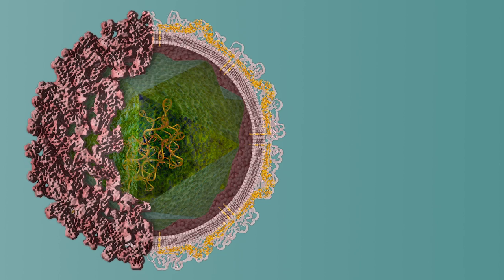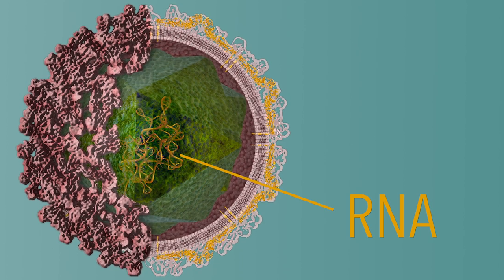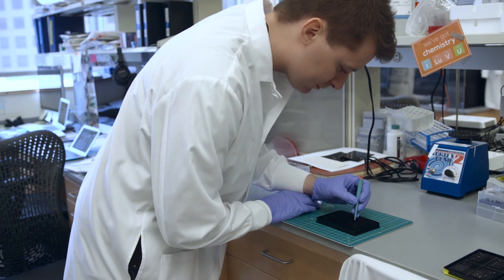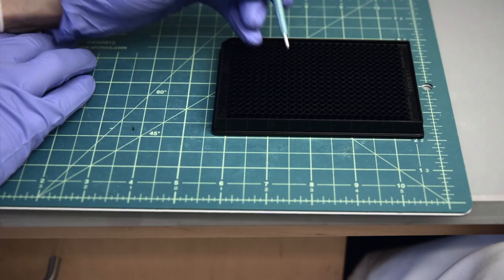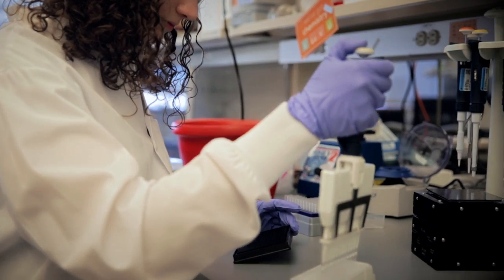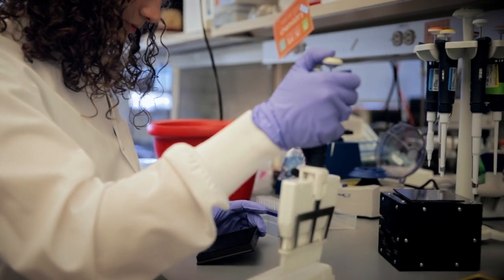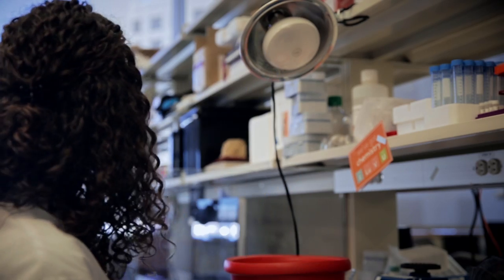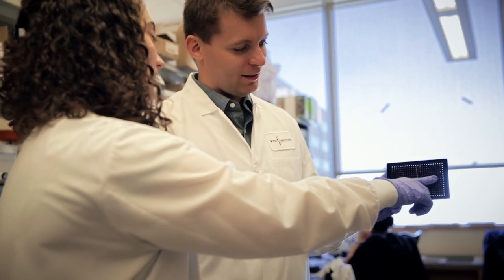Zika virus is an RNA virus, which basically means that the genome it's carrying around inside has RNA in it. The idea is that we create an RNA based sensor, and then you hydrate it with a sample, and then depending on if Zika virus is present or not, there's a color change and you can easily see it with the naked eye.